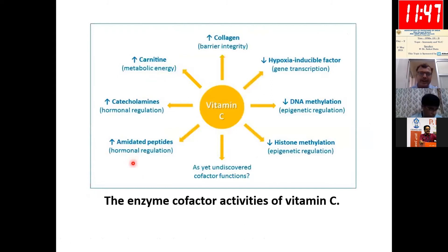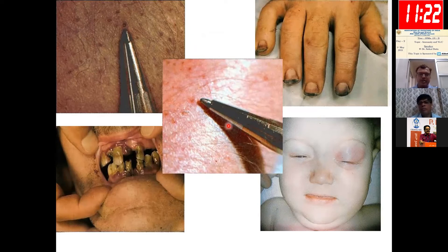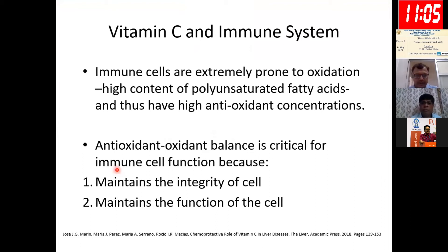Vitamin C has many enzymatic cofactor activities, including increasing collagen synthesis, reducing hypoxia-inducible factor, reducing DNA methylation, and increasing catecholamines. We know that deficiency of vitamin C causes scurvy, with features like perifollicular hemorrhages, splinter hemorrhages, periorbital edema, and corkscrew hairs. Immune cells are extremely prone to oxidation, partly because of their high concentration of polyunsaturated fatty acids, so antioxidants must be present in adequate amounts to maintain the antioxidant-oxidant balance crucial for cell integrity and function.